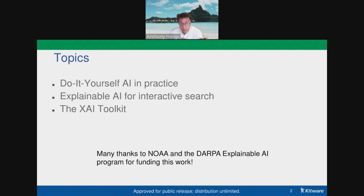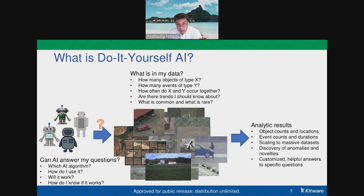So what is do-it-yourself artificial intelligence? Well, typically someone has a large pile of data — in this case, imagery and video, but there's also a ton of work in natural language and structured data and multimedia data. People want to know what's in their data: how many objects are in there, how many events, what trends exist over time if looking at a common location, and what is typical versus unusual.